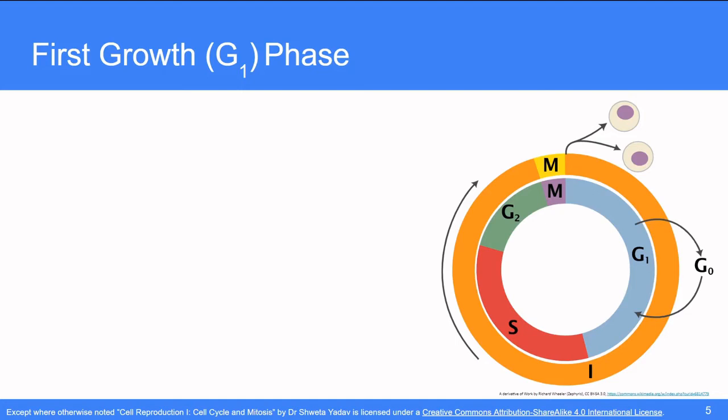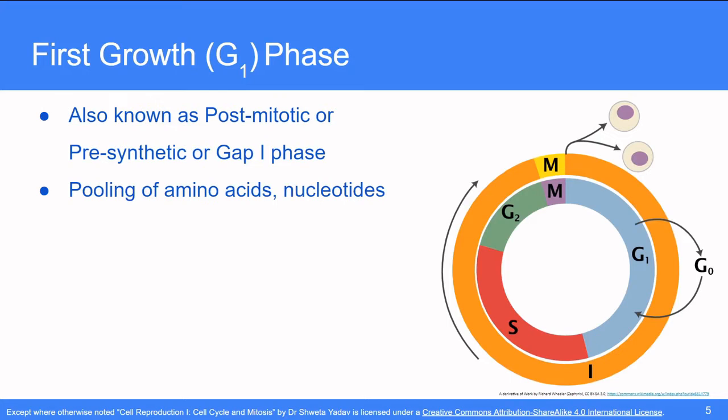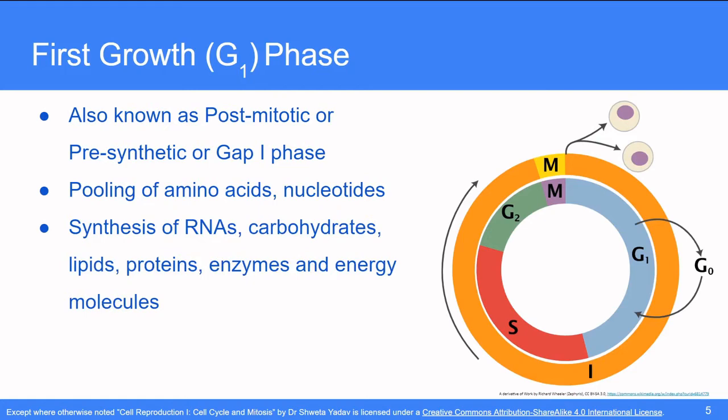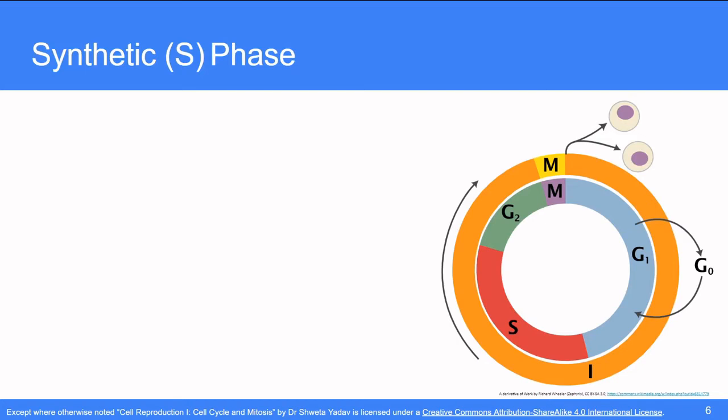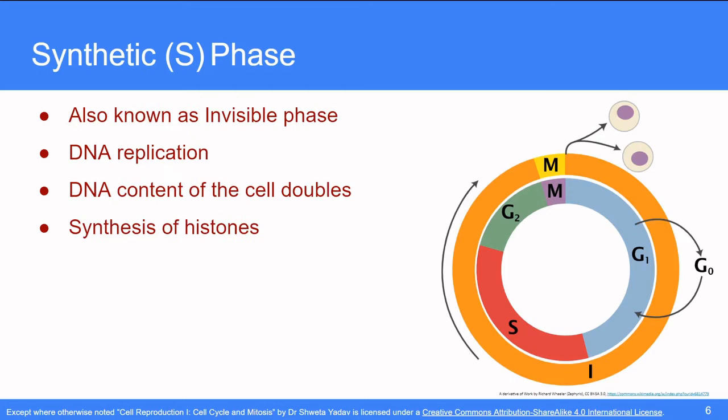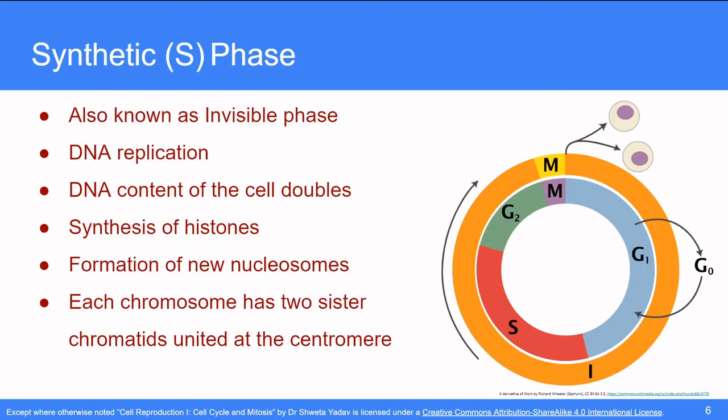The first phase of the cell cycle is the first growth phase. It is also known as the post mitotic or presynthetic or gap 1 phase. In this stage, the pooling of amino acids, nucleotides and the synthesis of RNAs, carbohydrates, lipids, proteins, enzymes and energy molecules takes place. The synthetic phase is also known as the invisible phase. As there are no visible changes in the cytoplasm or the nucleus. Here, the DNA replicates and the DNA content of the cell doubles up. This is followed by the synthesis of histones which further associate with the DNA molecules and form the new nucleosomes. Each chromosome now has two sister chromatids which are united at the centromere.